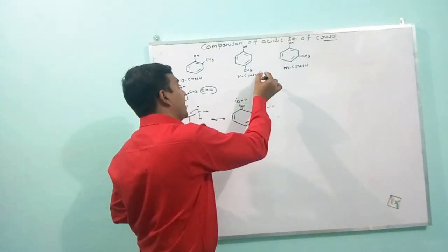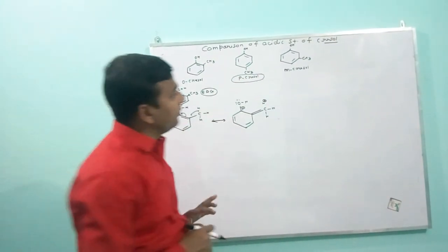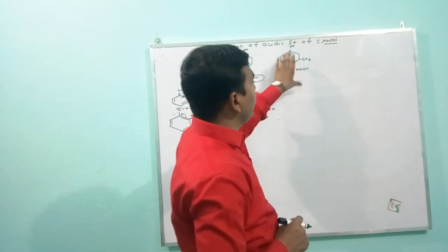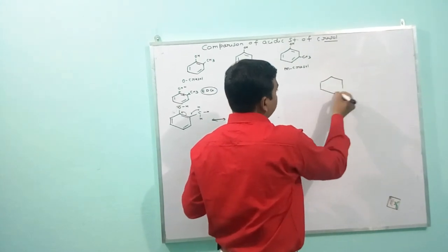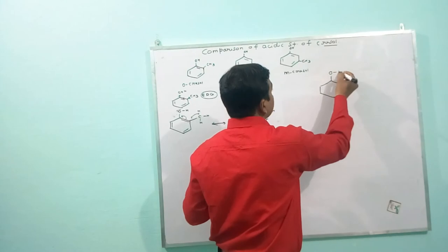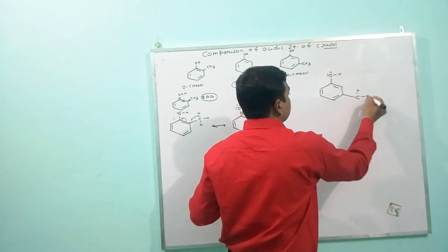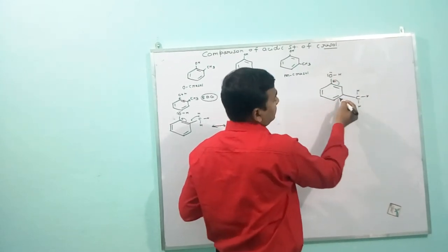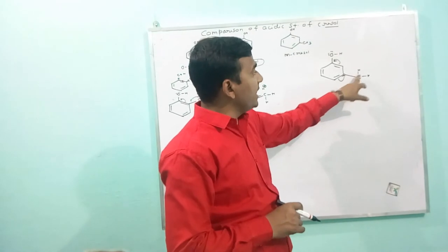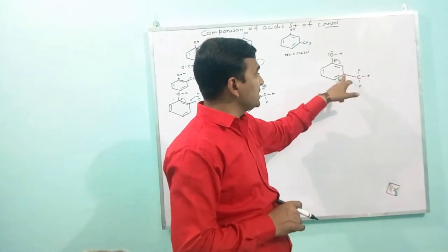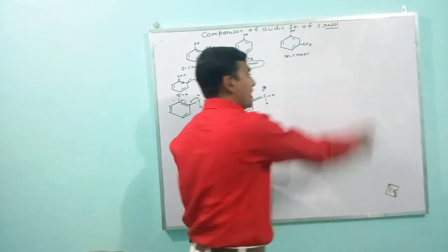Similarly, para cresol also has tendency to show the plus-I effect and also hyperconjugation effect. But in case of meta cresol, this compound cannot show the hyperconjugation effect. Because here negative charge is available, so bond cannot be formed and sigma electron cannot be moved towards this carbon atom. Hence, meta cresol cannot show the hyperconjugation effect.